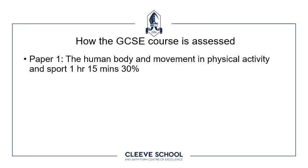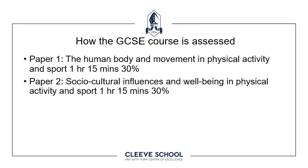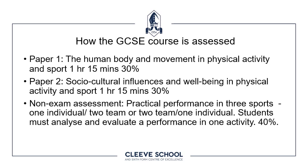We are assessed in GCSE PE in a number of ways. The first paper is based on the human body and movement in physical activity. It's one hour 15 minutes and it's worth 30% of the qualification. Paper two focuses on the socio-cultural influences and well-being in physical activity and sport. Again, this is one hour 15 minutes and it's worth 30%. The non-exam assessment, or NEA, is the practical element of the course.